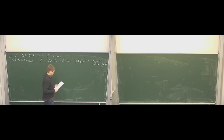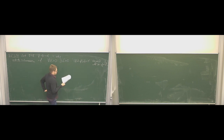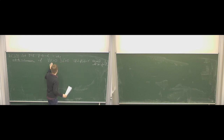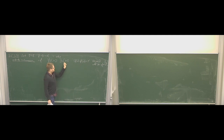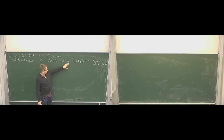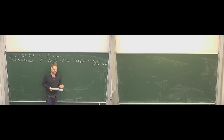The idea is: in ordinary continuity, for each point we would have some delta, but this delta would depend on the point. Here, we can take the same delta for each point — this delta doesn't depend on the point a anymore. We take the same delta at each point, and this is indeed something stricter than continuity.